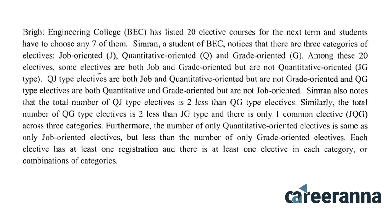Simran also notes that the total number of QG type electives is two less than the QJ type elective. Similarly, the total number of QJ type elective is two less than the JG type. And there is only one common elective JQG across all three categories.